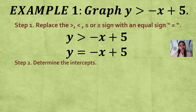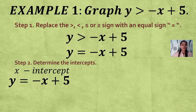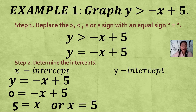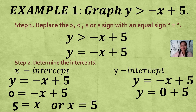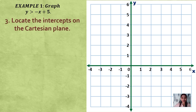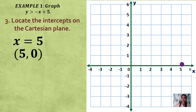Step 2: determine the intercepts. To find the X-intercept, set Y = 0. Substituting, we get the X-intercept as 5. To find the Y-intercept, set X = 0. Simplifying, Y = 0 + 5, so the Y-intercept is 5. Step 3: locate the intercepts on the Cartesian plane — the X-intercept is at (5, 0) along the X-axis, and the Y-intercept is at (0, 5) along the positive Y-axis.